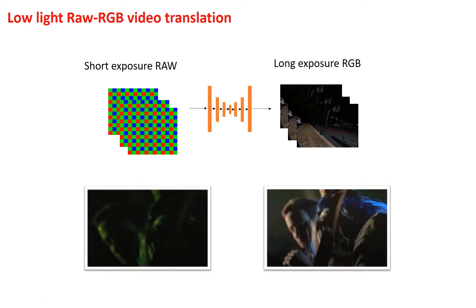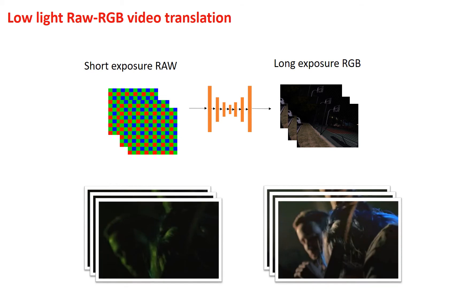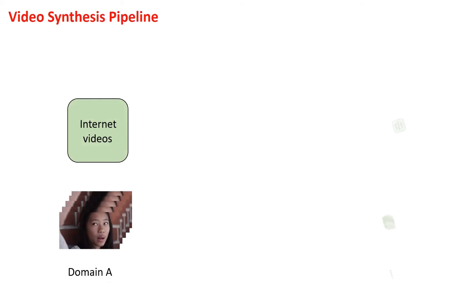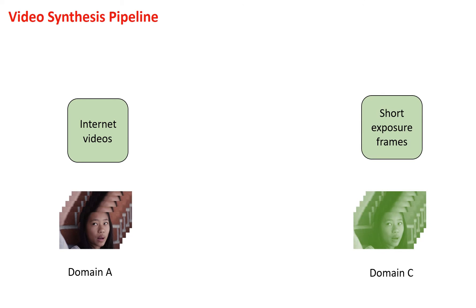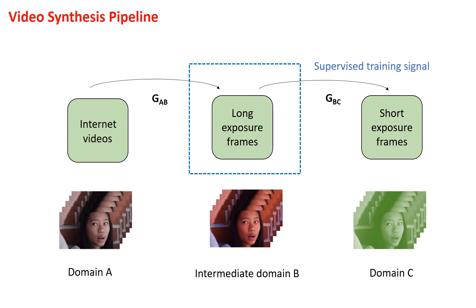We address the data collection bottleneck for learning the raw-to-RGB mapping by proposing a novel video synthesis pipeline that can generate abundant dynamic video training pairs. We map videos found in the wild to a short exposure domain characterized by a camera sensor. Since there is no paired relationship between the source and target distributions, we use an intermediate long exposure domain that provides an extra supervised training signal with a target domain.